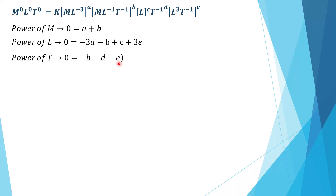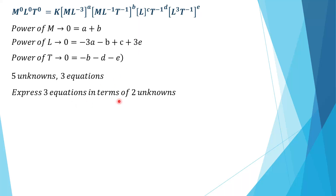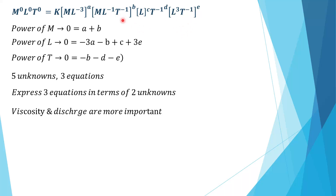In this problem there are five unknowns but we have only three equations. In such cases we express the three equations in terms of two unknowns. We consider the two most important parameters: viscosity (b) and discharge (e). We then represent the remaining three — density (a), diameter (c), and angular velocity (d) — in terms of b and e.